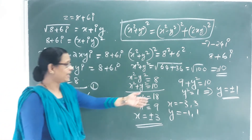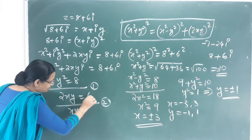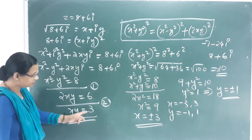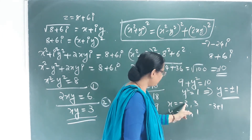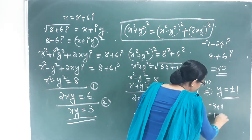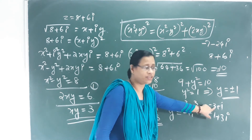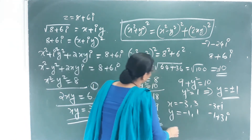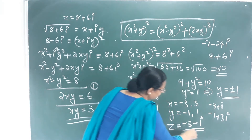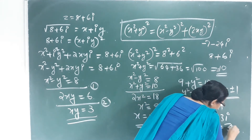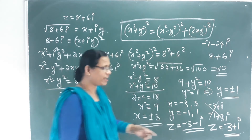There are four complex numbers as combinations, but we need to use Equation 2: xy must be positive — specifically xy = 3. So valid combinations are x = 3, y = 1, or x = −3, y = −1. The two square roots are 3 + i and −3 − i.